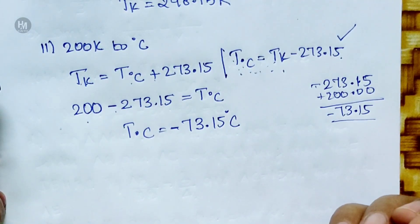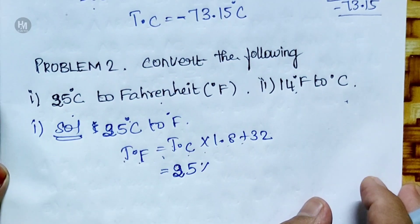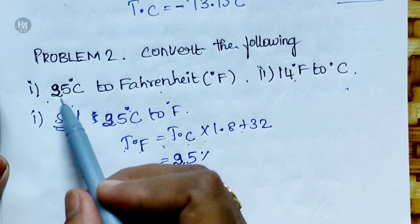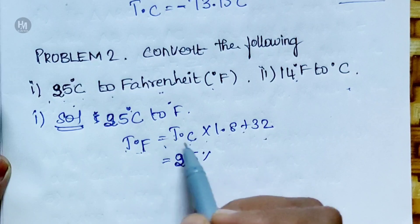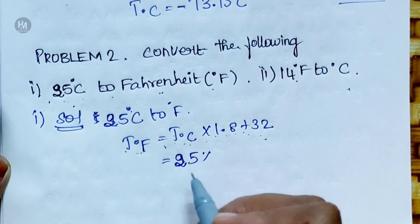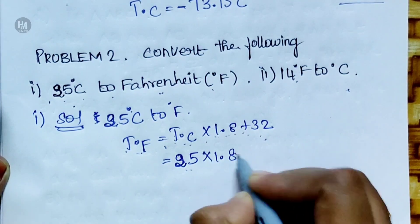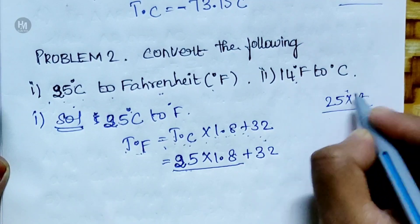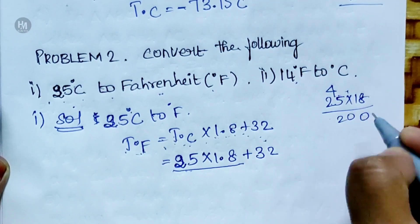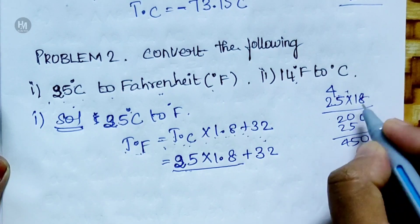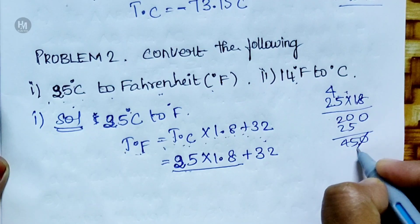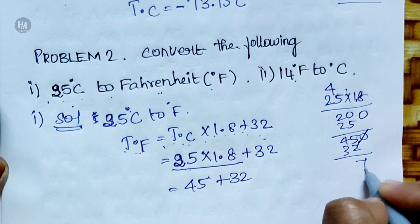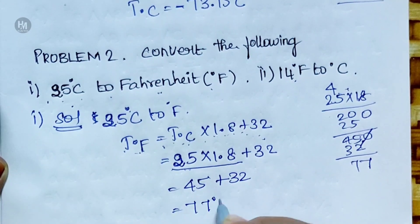Second problem: Convert 25 degrees Celsius to Fahrenheit. Formula: TF is equal to TC into 1.8 plus 32. Substituting TC equal to 25: 25 into 1.8 equals 45, then 45 plus 32 equals 77. So the answer is 77 degrees Fahrenheit.